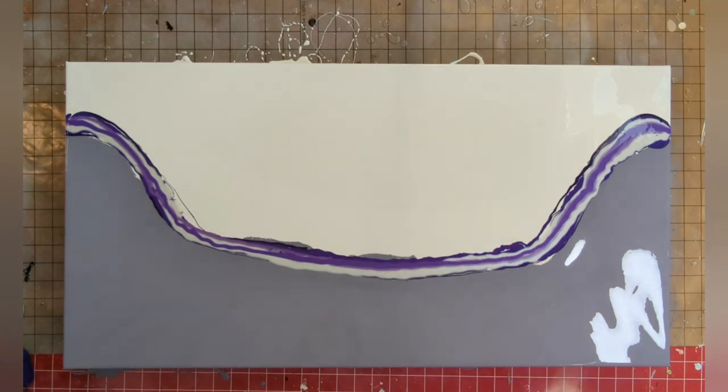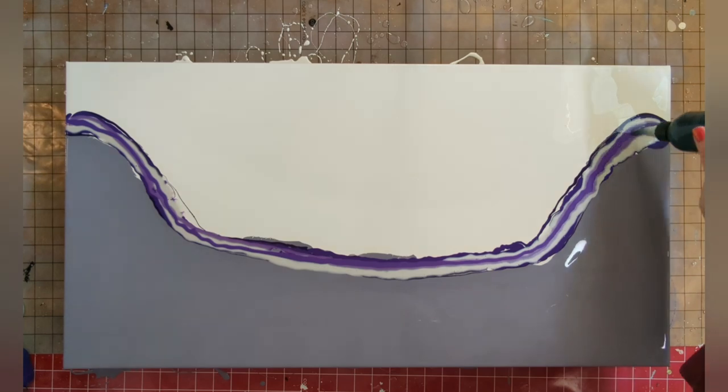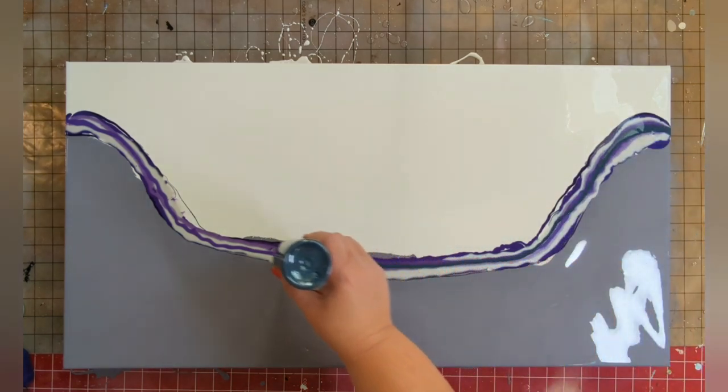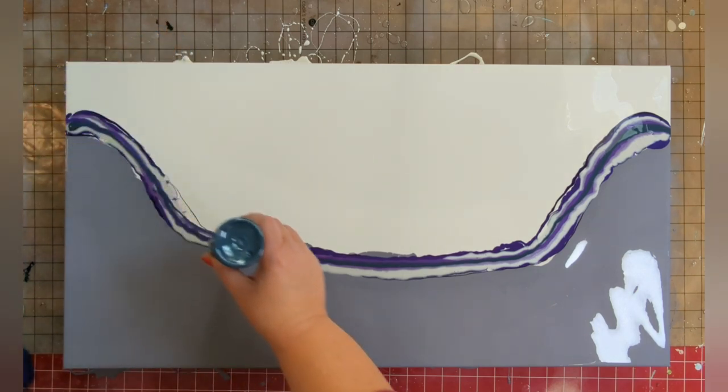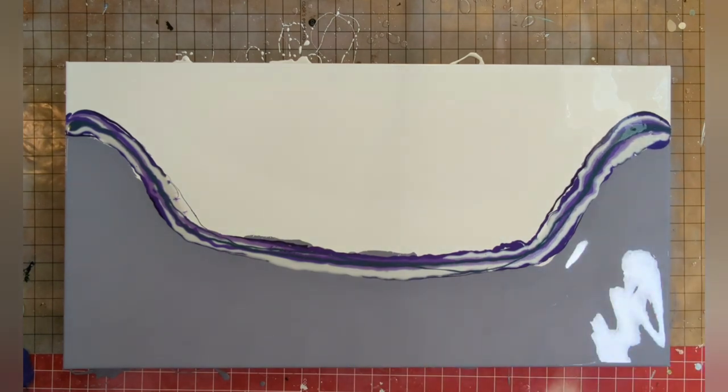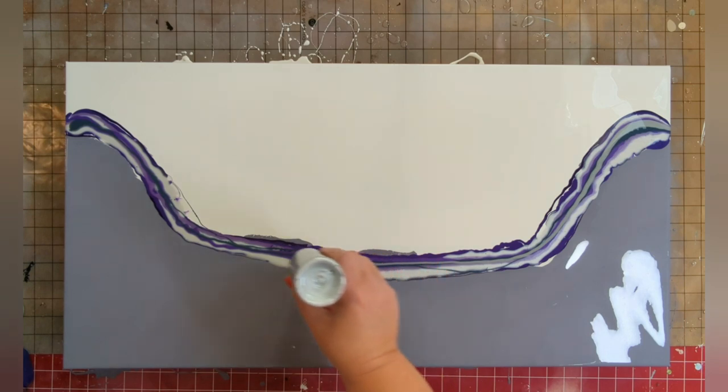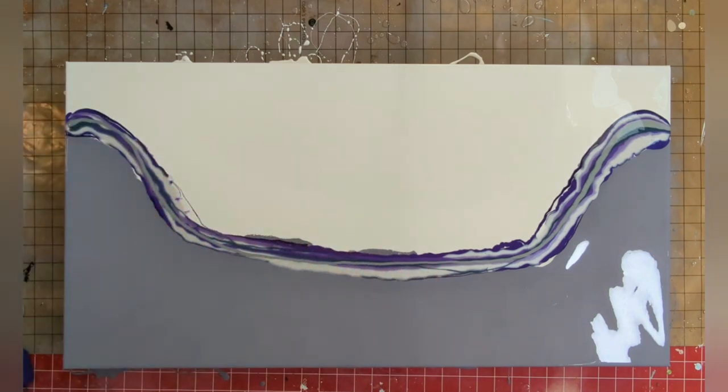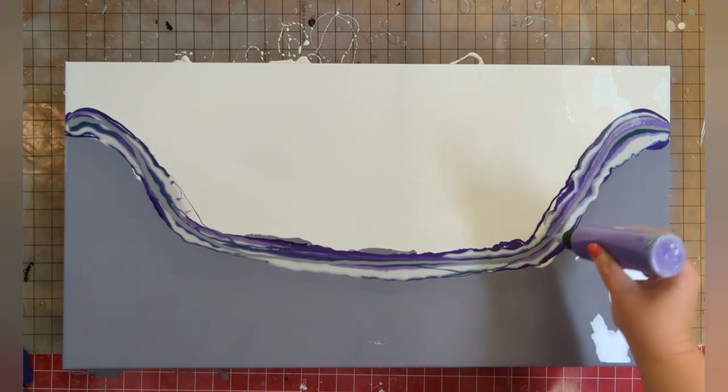This Nebula by Little Piggy Pigments is kind of a bluish black gray, so I think it will look really pretty in here to give a little contrast. I think I'm going to just go through one more time, a little tiny bit of Silver by DecoArt Extreme Sheen, as we need those cells, and Arteza Purple.